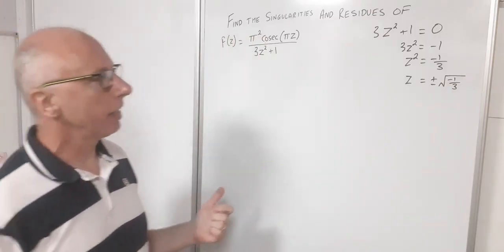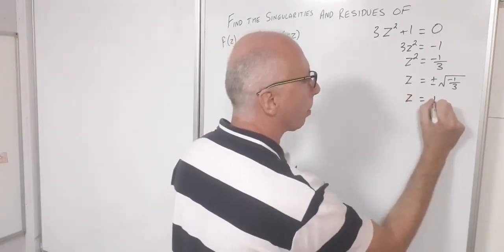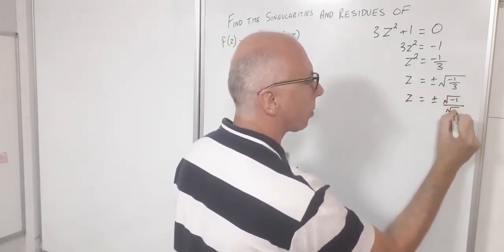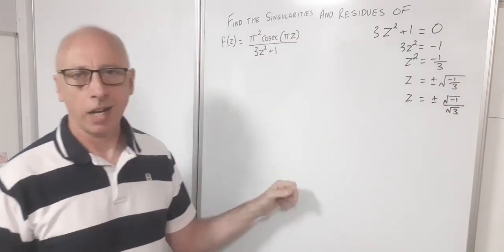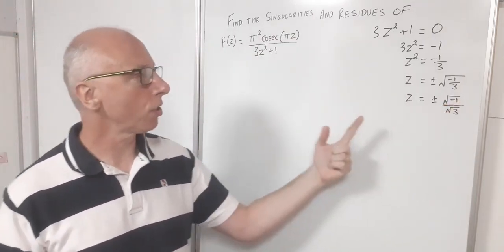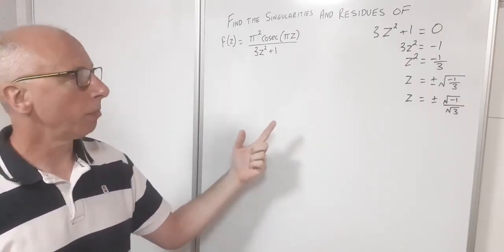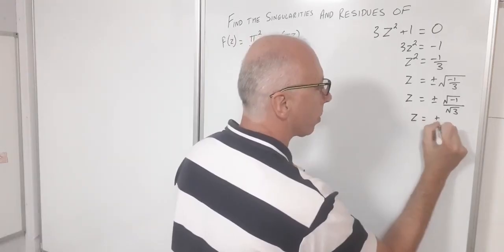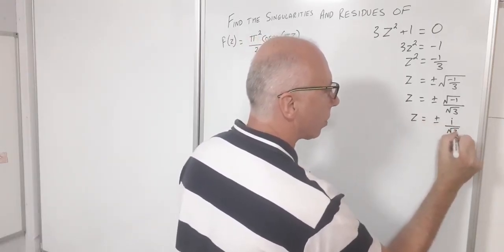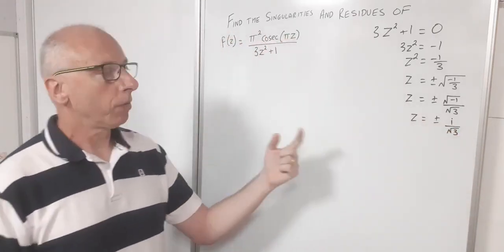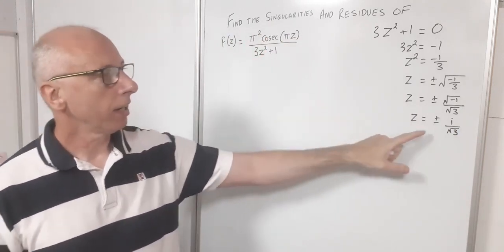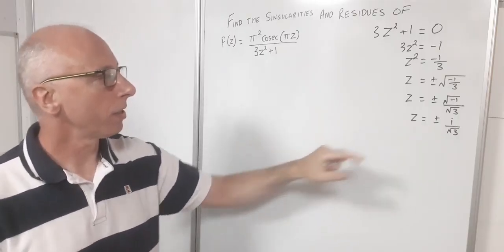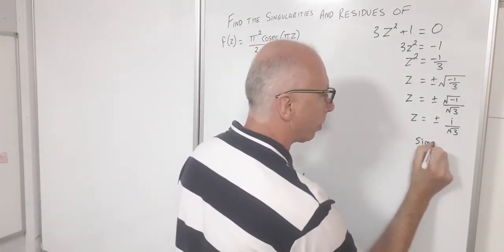We can rewrite that as z = ±√(−1) / √3, and since √(−1) = i, we get z = ±i/√3. So we've got two singularities, and both are simple poles of order 1.